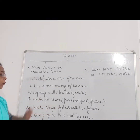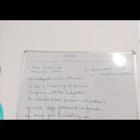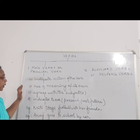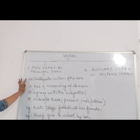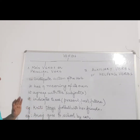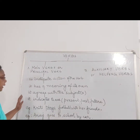Kriti plays football with her friends. Now what is Kriti doing? She plays — so 'plays' is the main verb. Here, plays is the main verb in this sentence. Why? Because it is showing the action. The sentence is also showing the meaning — the full sentence is complete, you can say. And it is agreeing with the subject: Kriti is the subject. What is she doing? She is playing football with her friends.